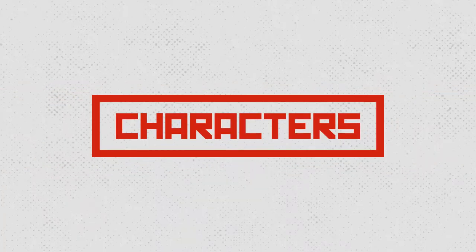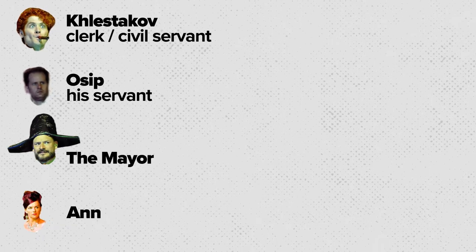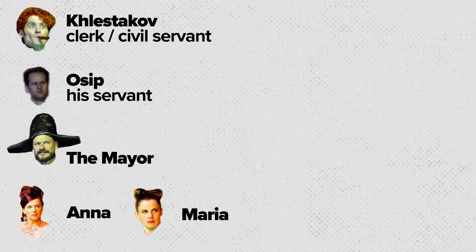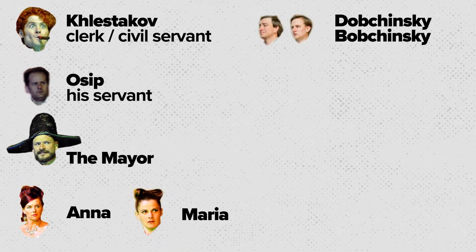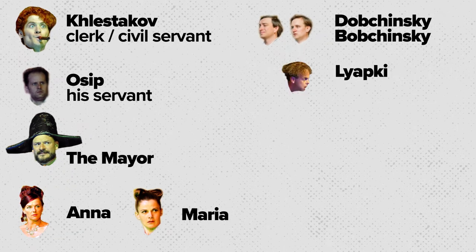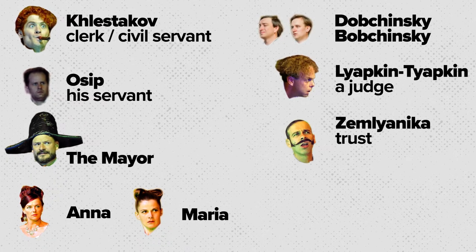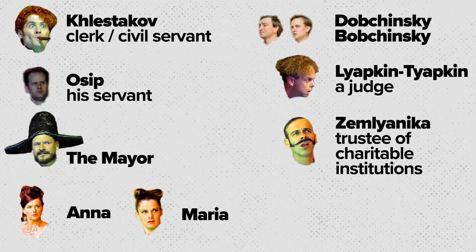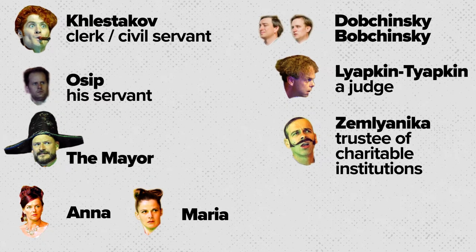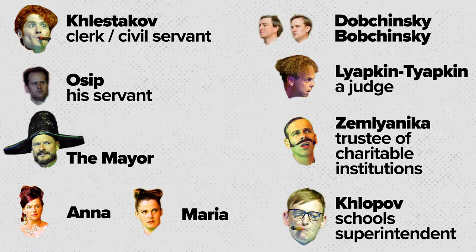The main characters are Klestikov, the clerk or civil servant; Osip, his servant; the mayor; his wife Anna and their daughter Maria; Dobchinsky and Bobchinsky, a couple of comedic landowners; Lee Apkin-Tiapkin, who is a judge; Zemlianneke, who is a trustee of charitable institutions; and Klopov, who is the school's superintendent.